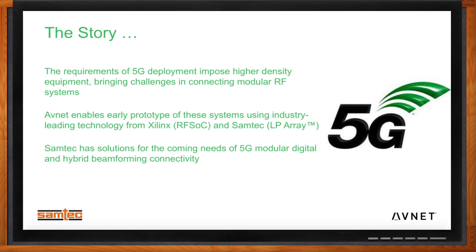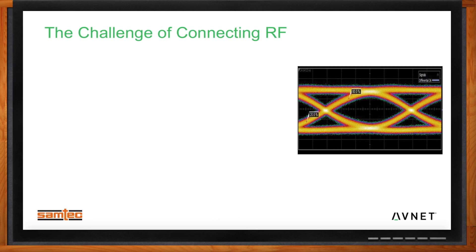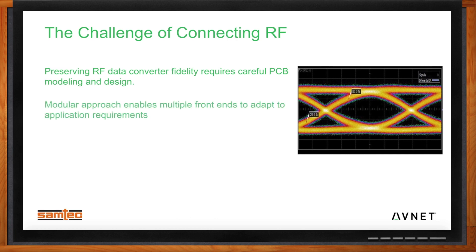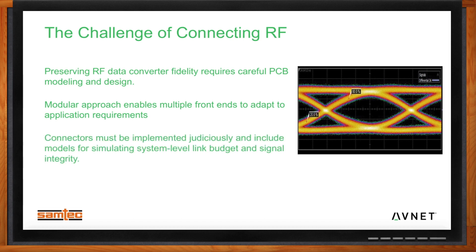There are some specific RF challenges when it comes to 5G. One of the core emerging technologies of the new 5G standard is millimeter-wave technology, enabling carrier frequencies ranging from 30 GHz all the way out to 300 GHz. Capturing those signals and transferring them through the system imposes fidelity requirements throughout — especially on the data converters, both the ADCs and DACs — and it also requires highly skilled and careful PCB modeling and design. A modular approach, covering both front ends and application requirements, eases system design. Connectors must be implemented judiciously and include highly accurate models for simulating the system-level link budget and signal integrity at the PCB level.